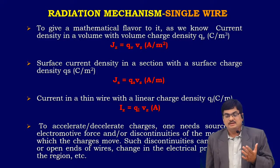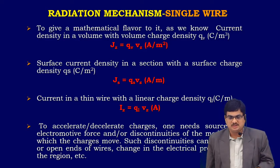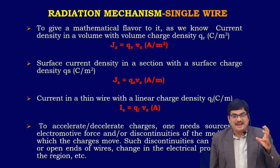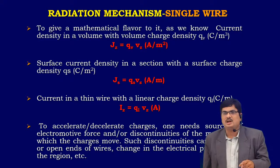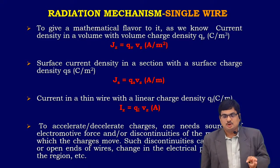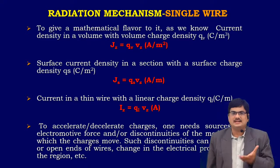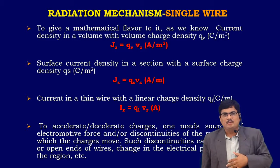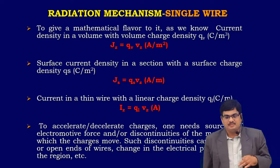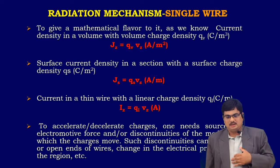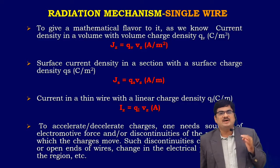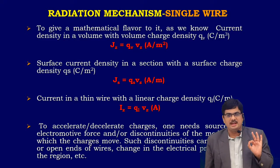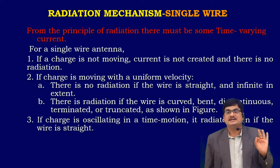So dv/dt represents accelerated or decelerated charges. To get this accelerated or decelerated charge, we need to apply some electromagnetic force or have discontinuous structures to get the charges to move. If the charge is uniform, it cannot be moved. These discontinuous structures should have bends, open wires, or possess specific electric properties of the region. The basic principle of radiation is time-varying currents or accelerating/decelerating charges are the sources of radiation.